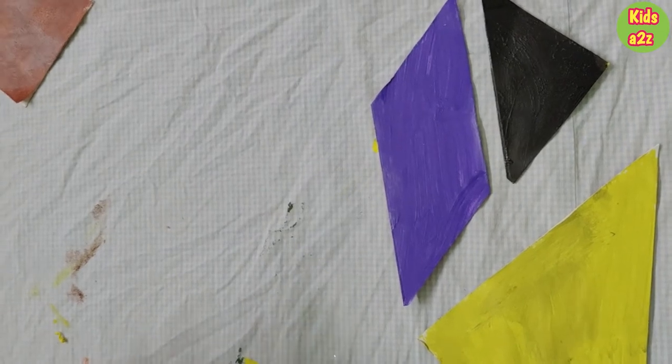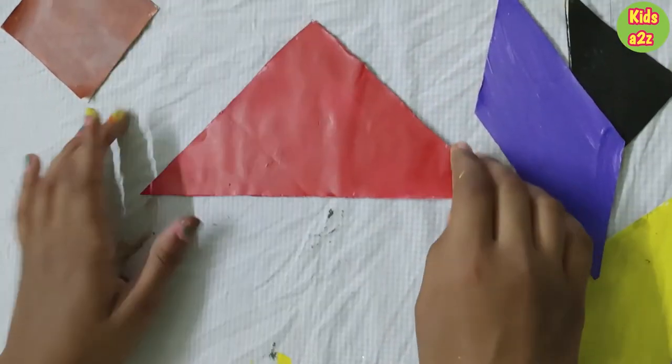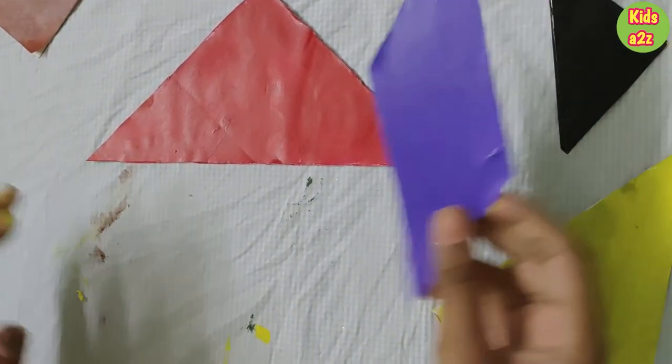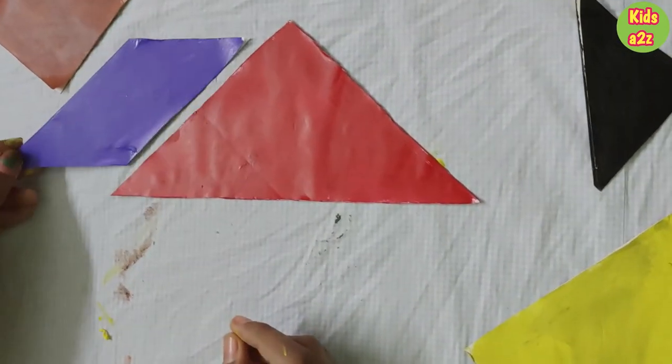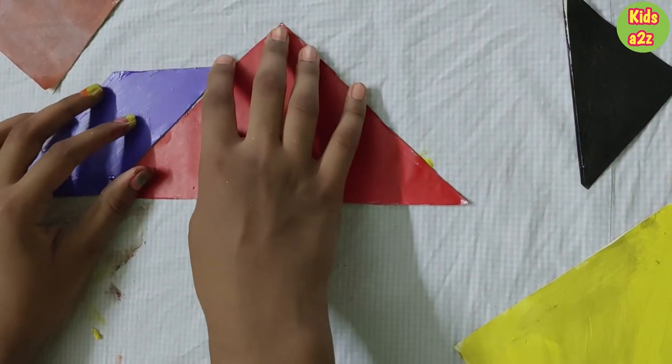First we will take a big triangle and put it over here. Next let's take a parallelogram and put it over here, beside the big triangle.